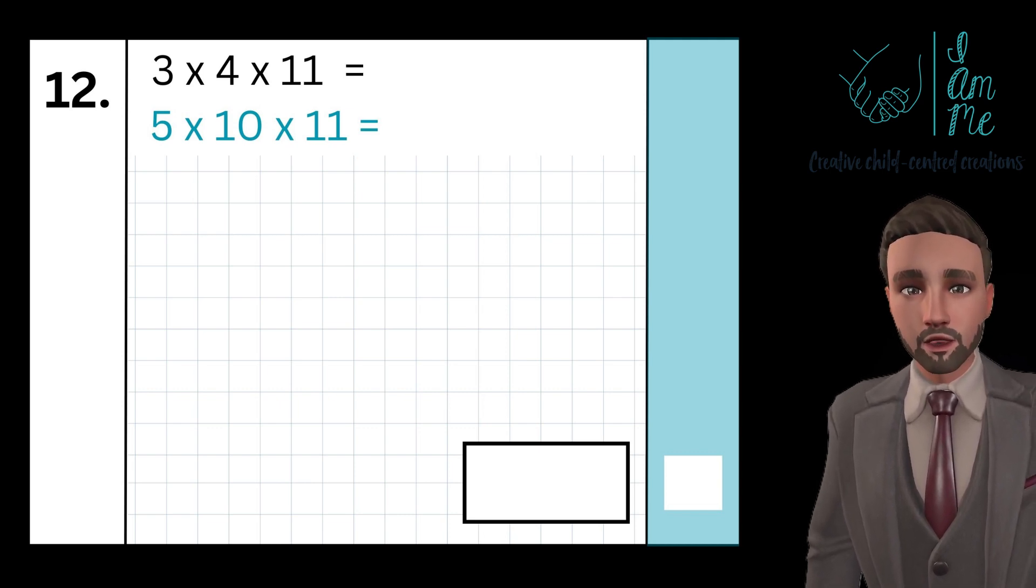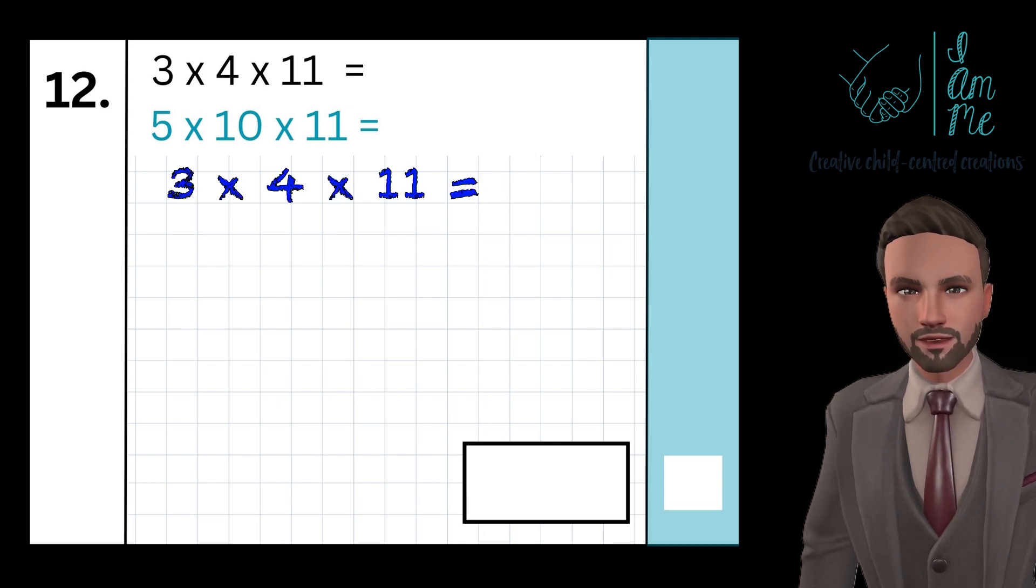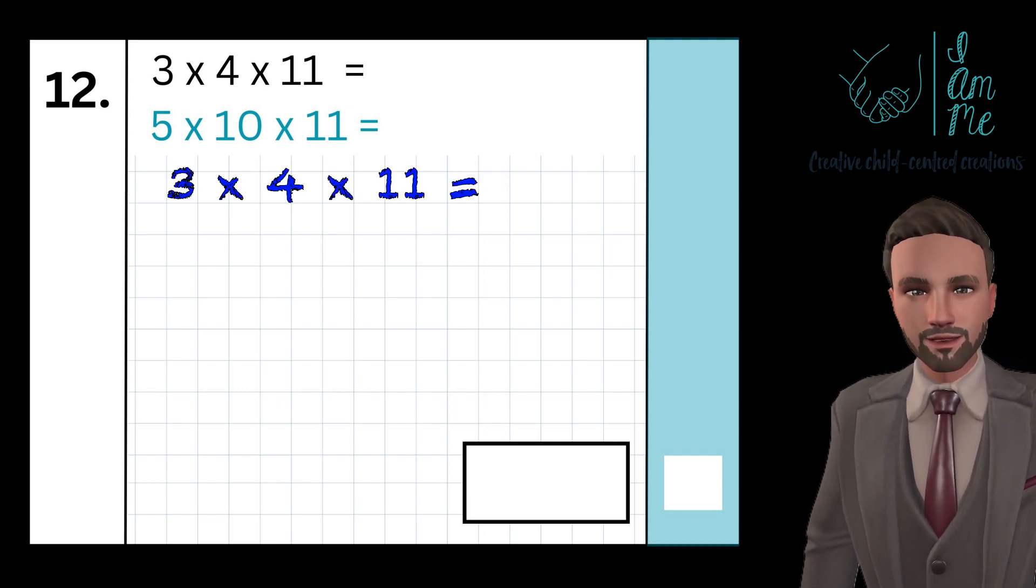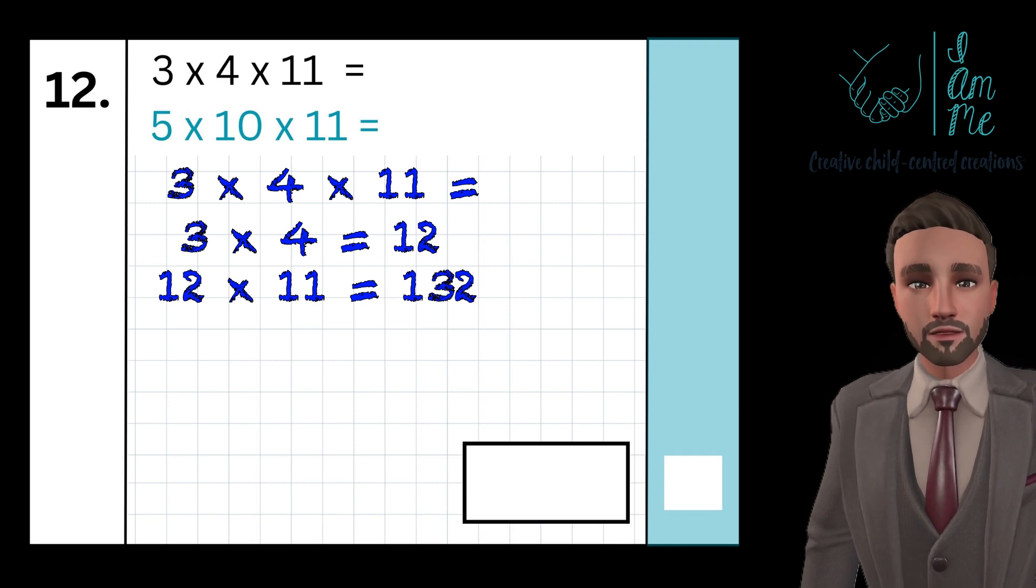I would recommend doing the whole equation in our heads. Let's take a look. Three multiply by four times eleven. I know multiplying by eleven is quite simple, so I multiply four and three to give me twelve, and then multiply that by eleven. That will give me 132.